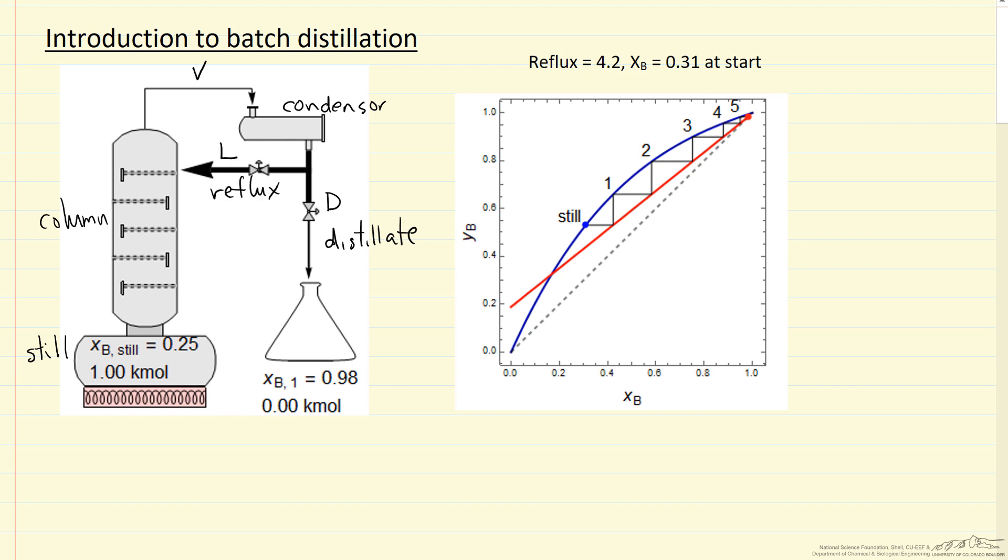On the right we show the mole fraction of vapor over mole fraction of liquid for this particular binary mixture. The blue line is equilibrium data, for example from Raoult's law for ideal solution.